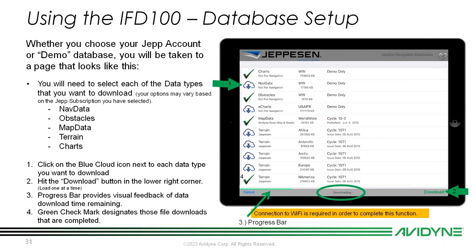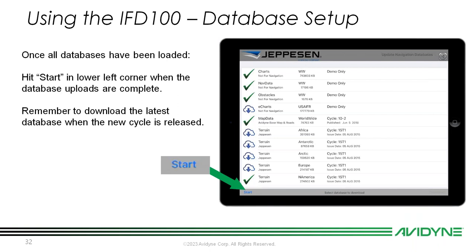Once logged in with your credentials, you reach the database download page. Anything with a green check mark is already downloaded onto the iPad; anything with a blue cloud with an arrow is available for download. You can only download one at a time, but they go really fast — especially with fast internet. Click on one, hit download, let the progress bar complete, then move on to the next. Once all databases are downloaded, hit Start in the lower left corner, and remember to download the latest database when a new cycle is released.